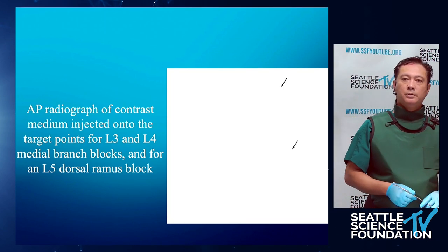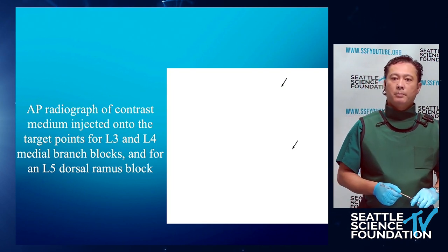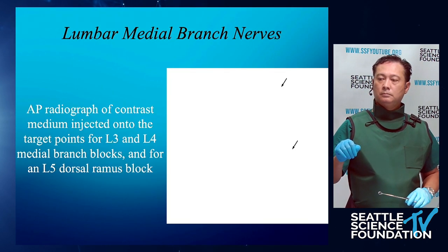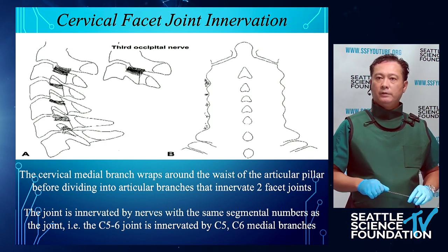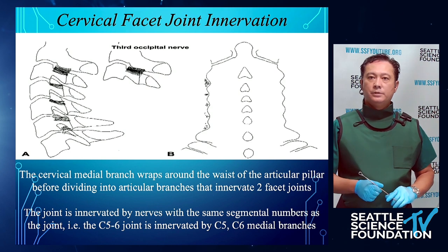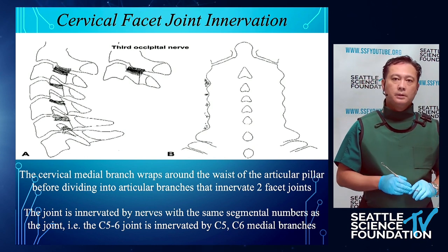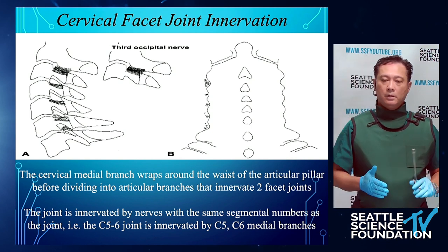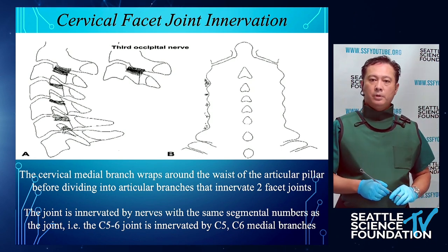Looking at an AP radiograph of contrast medium injected onto the target points of L3 and L4 medial branches, and for the L5 primary dorsal ramus. Looking at the cervical medial branches at the C2-3 facet joint level, we can see the pattern of where the actual nerve is located and the best area for us to target that nerve, right at the C2-3 joint line. For C3, C4, C5, and C6, we're looking at the middle of the articular process.